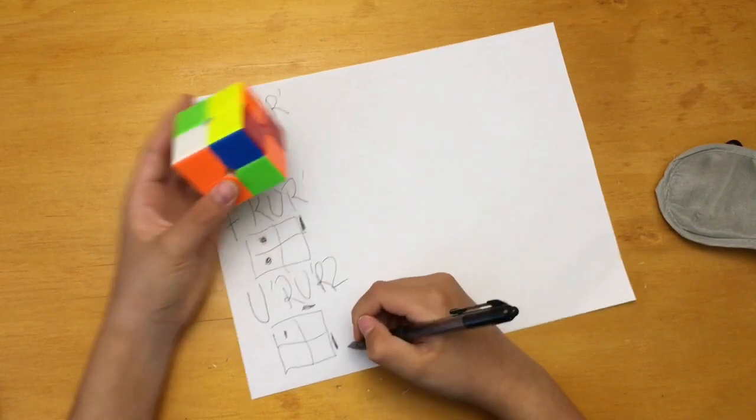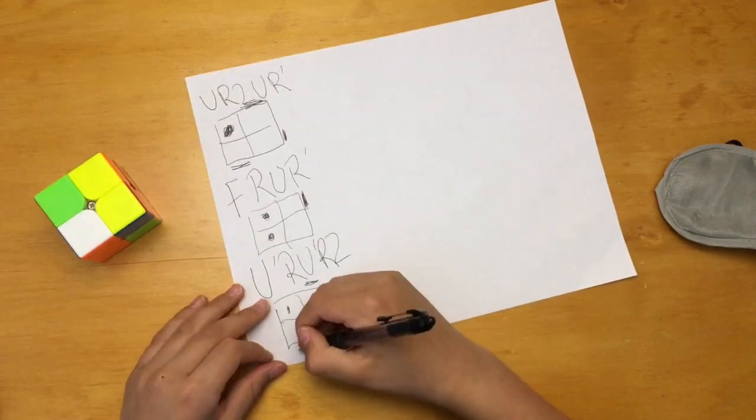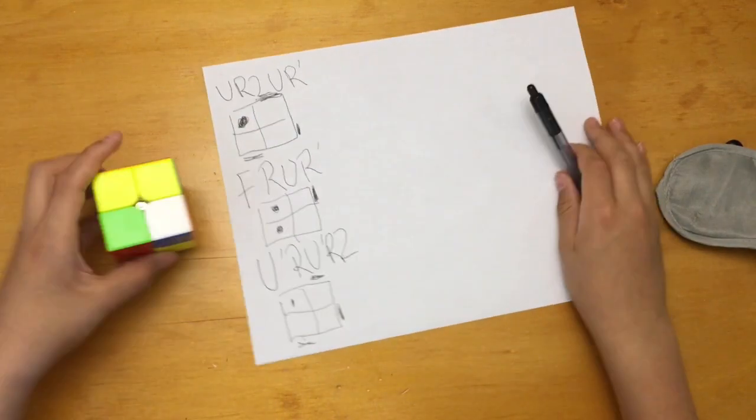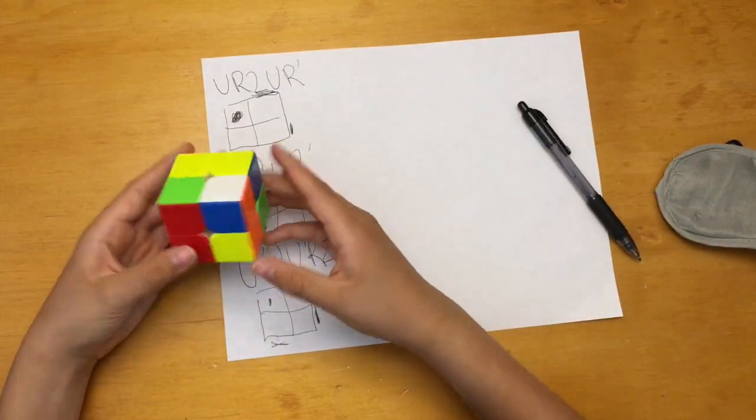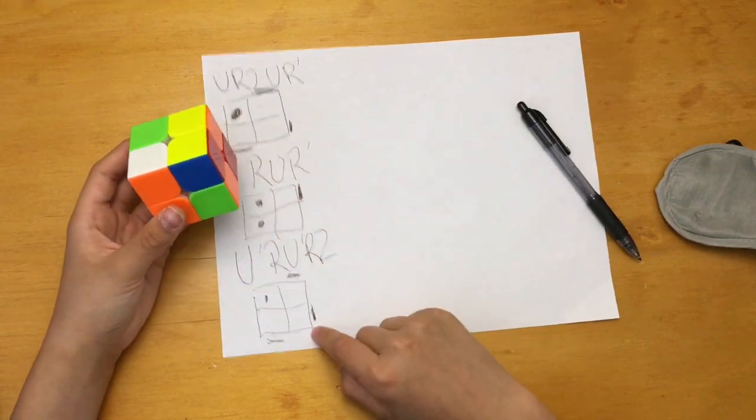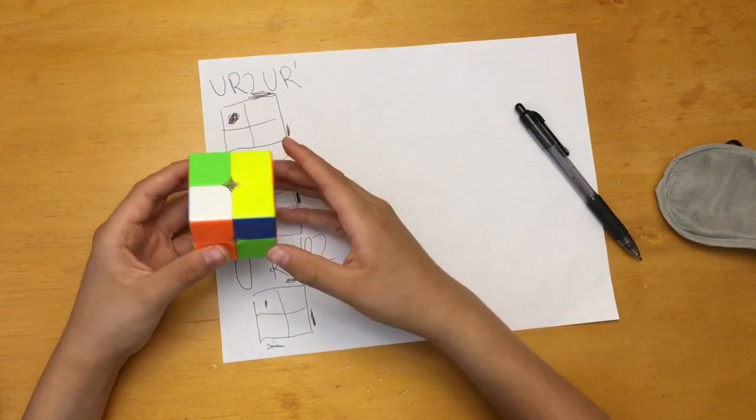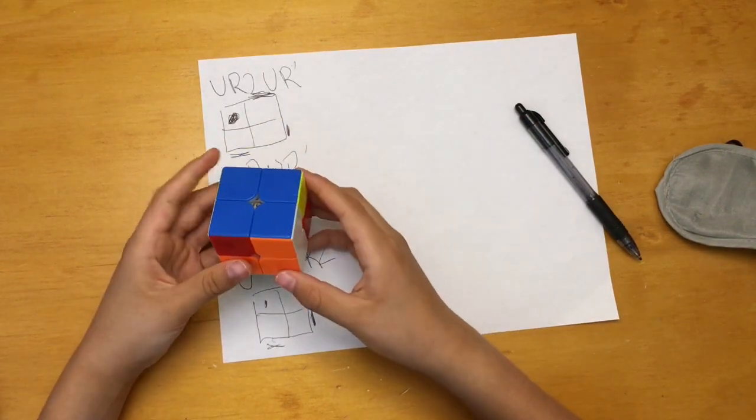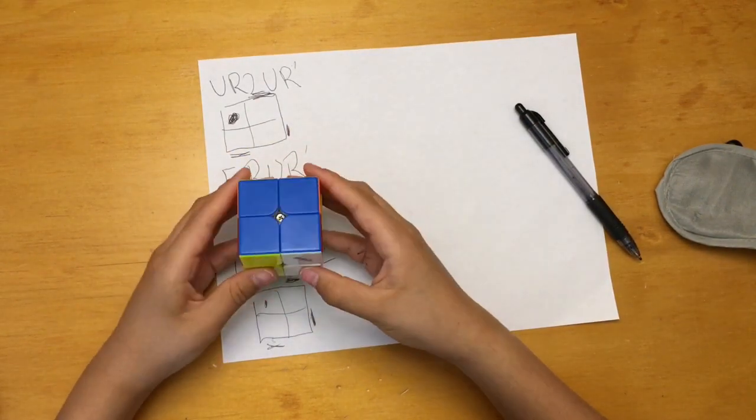Now that we have tracked three of the corners we can tell it's another anti-sune like our first one. So what we're gonna do here is solve our side and then know how to hold the cube after. This is to eliminate pauses and so that is hopefully helpful to you.